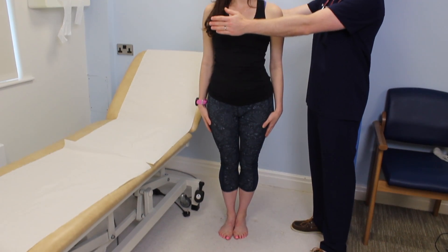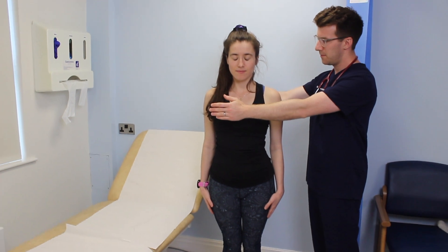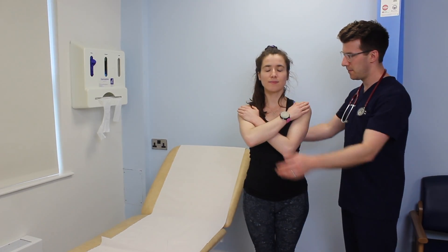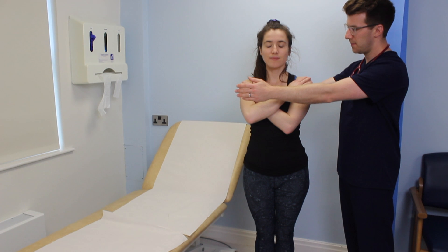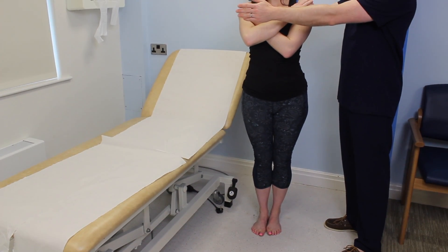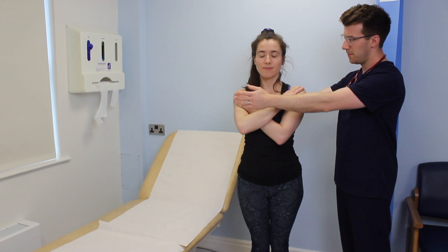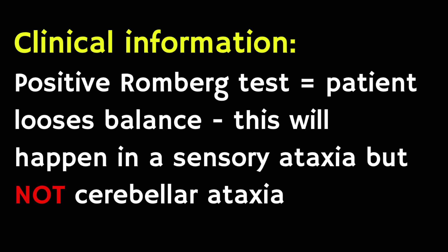If they seem reasonably steady, ask the patient to close their eyes. They can either hold their hands beside themselves or hold them across the body. Watch to see if the patient is able to stay steady or if they begin to wobble. In sensory ataxia, the patient is likely to lose balance — this is a positive Romberg's test. In cerebellar ataxia, the patient should be no more unsteady with their eyes closed than with their eyes open.